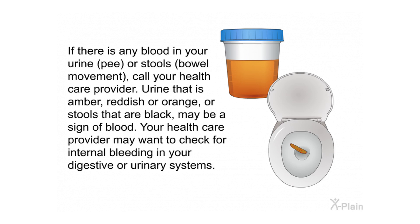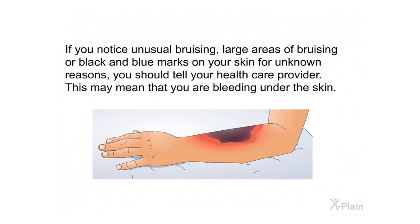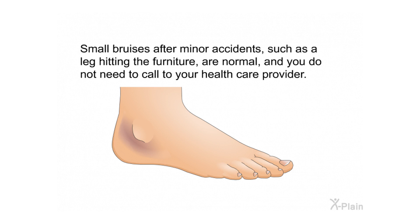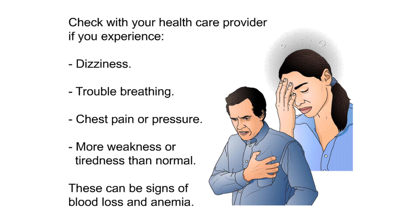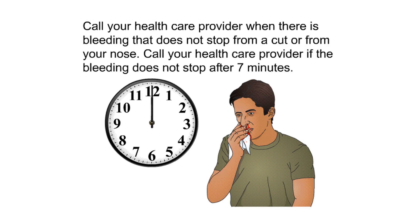Call your health care provider if there is any blood in your urine or stools — amber, reddish, or orange urine, or black stools may indicate internal bleeding. Report unusual bruising or large areas of black and blue marks on your skin for unknown reasons, as this may mean bleeding under the skin. Small bruises after minor accidents are normal. Also contact your provider if you experience dizziness, trouble breathing, chest pain or pressure, or unusual weakness or tiredness, as these can be signs of blood loss and anemia.